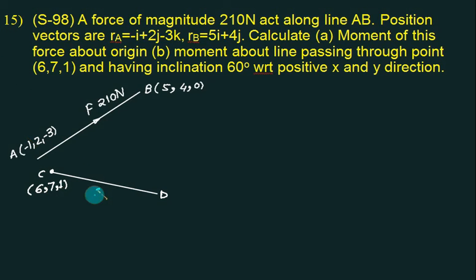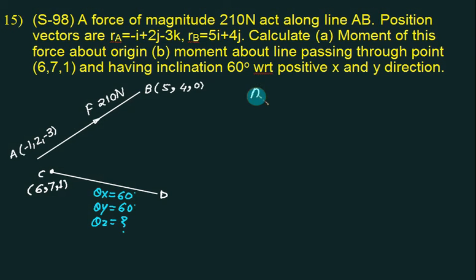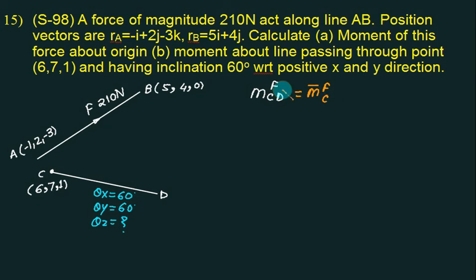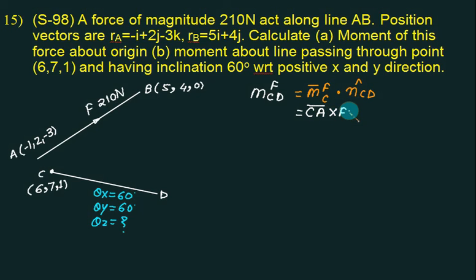The inclination of the line CD is theta x equals 60 and theta y equals 60. We do not know theta z, and we do not know the coordinate of point D either. He wishes to find the moment of the given force about line CD. We first calculate the moment of force about point C, which equals CA cross F, then take the dot product with unit vector CD.